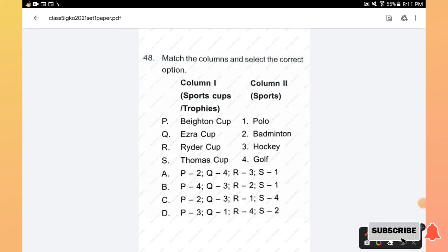Question number 48: Match the columns and select the correct option. Column 1, trophies are listed out and column 2, respective sports are listed. The Patanjali Cup is for hockey, Ezra Cup for polo, Ryder Cup for golf, and Thomas Cup for badminton. Hence option D is the right answer.